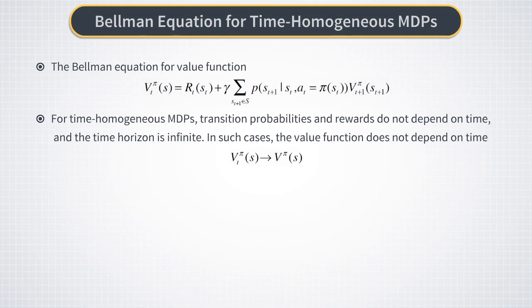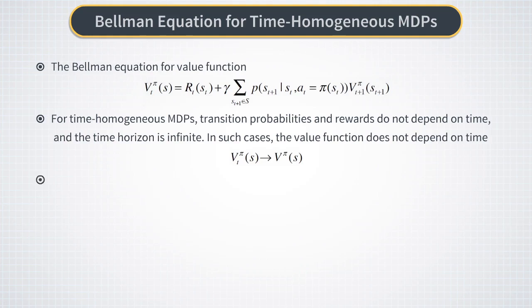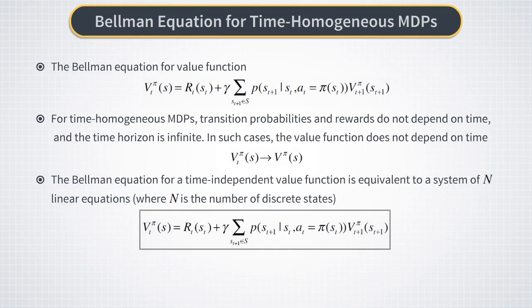In such case, the value function will also be independent of time, and therefore we can drop the time index from it. The Bellman equation for such cases becomes simply a system of linear equations, one equation for each possible state st. If our discrete set of states has n states, we will have n such linear equations. If transition probabilities are known, we can easily solve this linear system using methods of linear algebra.